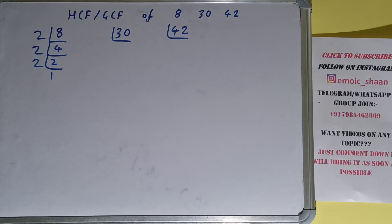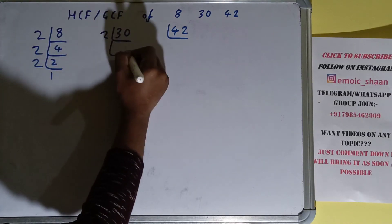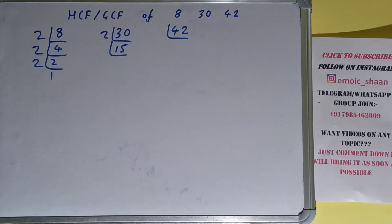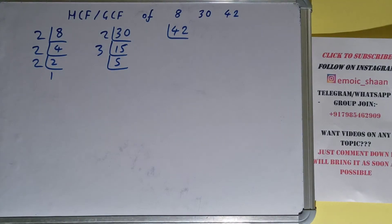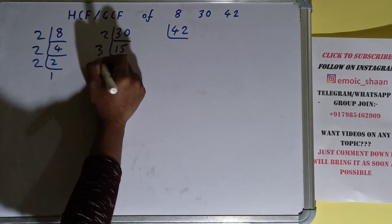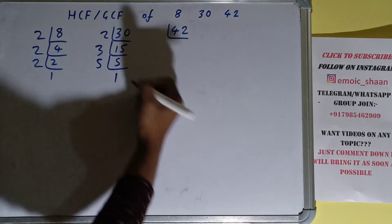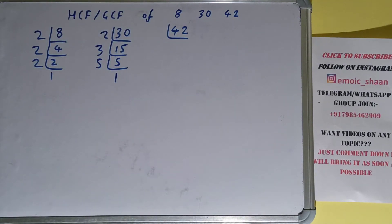Now we need to do the same with the number 30. Is the number 30 divisible by 2? Yes it is, and we'll be getting 15. Is 15 divisible by 2? The answer is no, so we'll go to the next lowest prime number, that is 3. Is the number 15 divisible by 3? Yes it is, and we'll get 5. Is 5 divisible by 3? The answer is no, because 5 is a prime number, so it is only divisible by itself. When we do so we'll get 1. So we are done with 30.